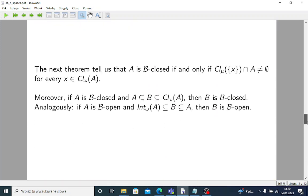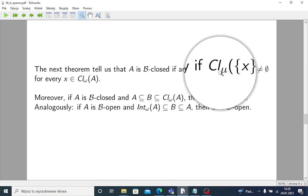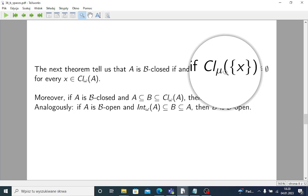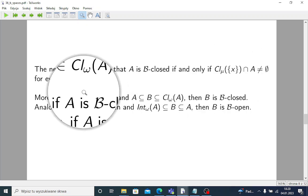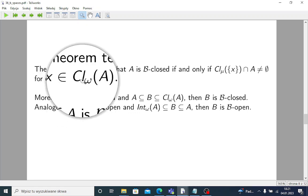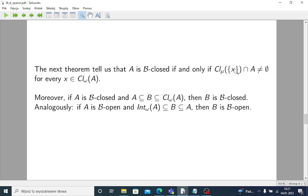There are several other theorems we will leave you. All the proofs are contained in the original paper of the authors, so you may check them. The next theorem, for example, tells us that A is B-closed if and only if μ-closure of any singleton of any x that belongs to omega closure of A - that intersection of this μ-closure with A is non-empty.